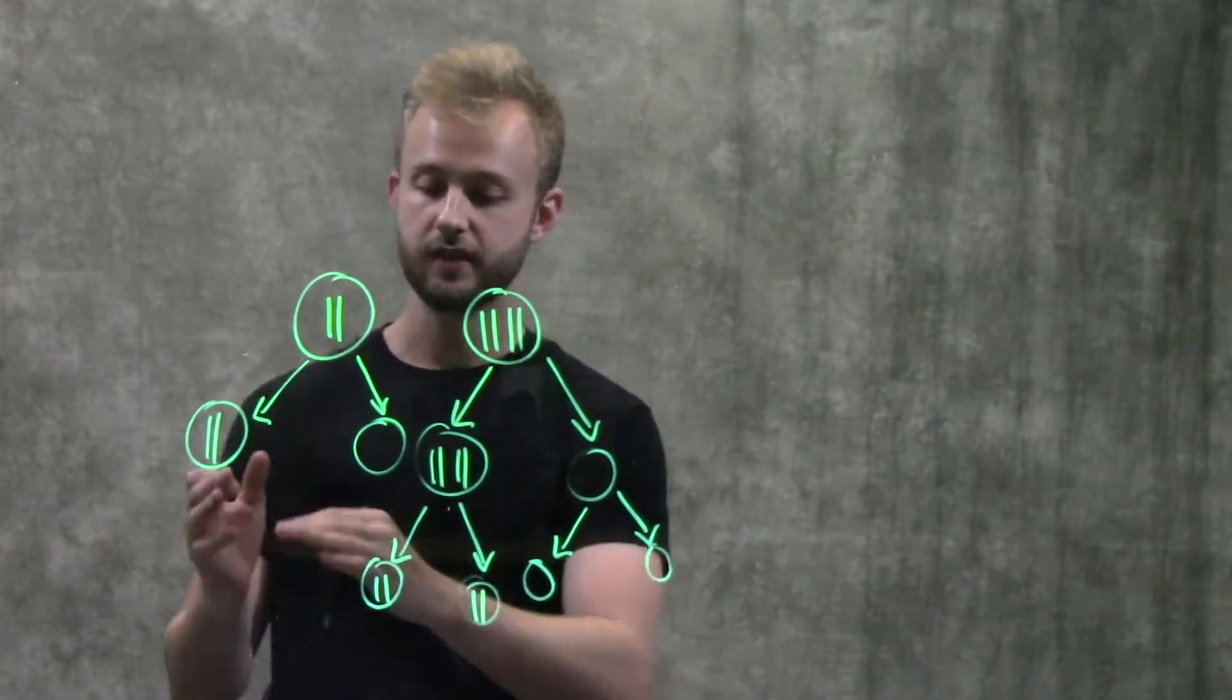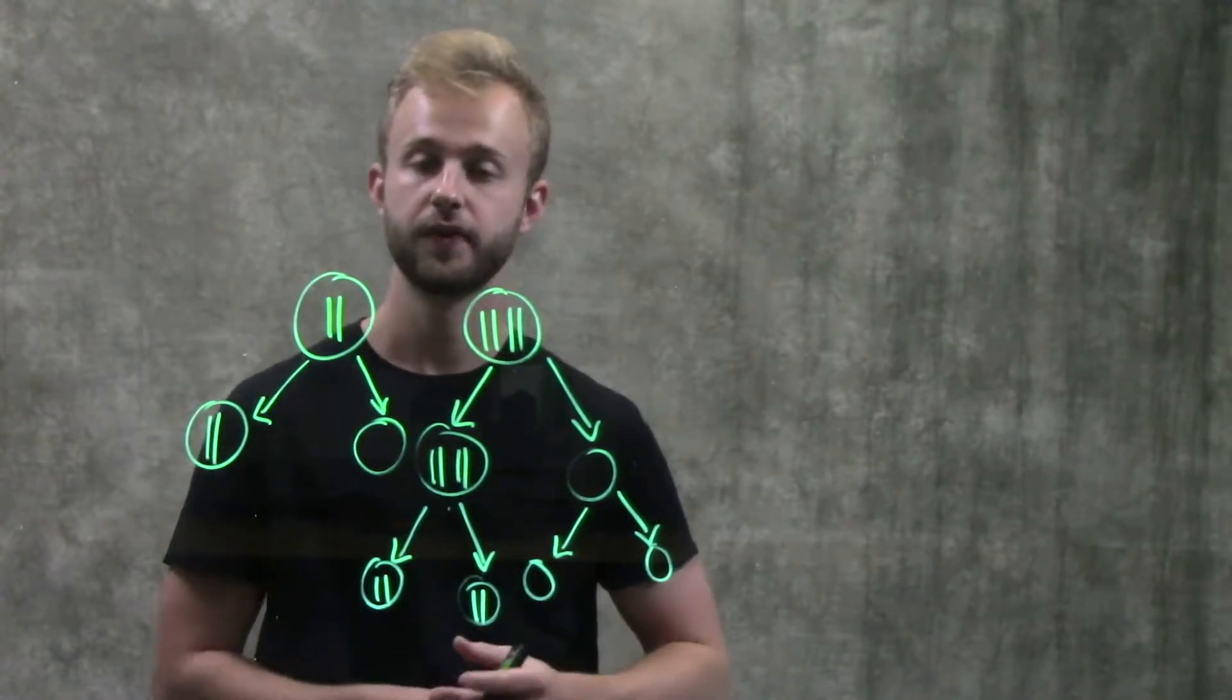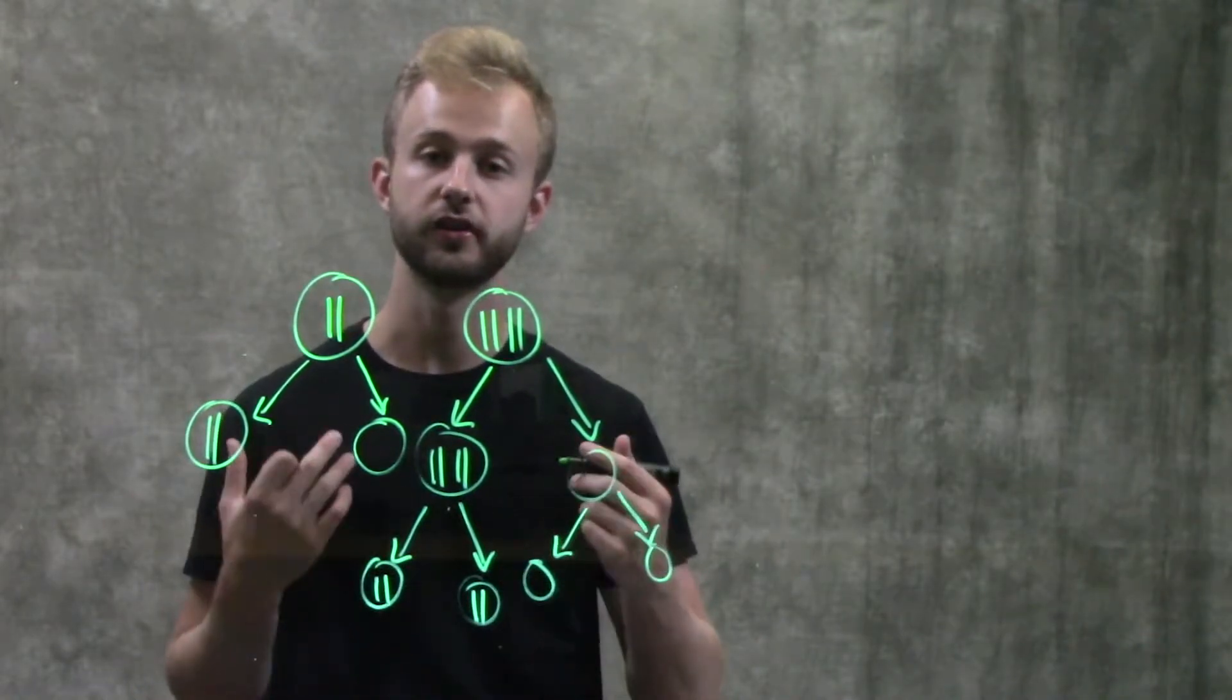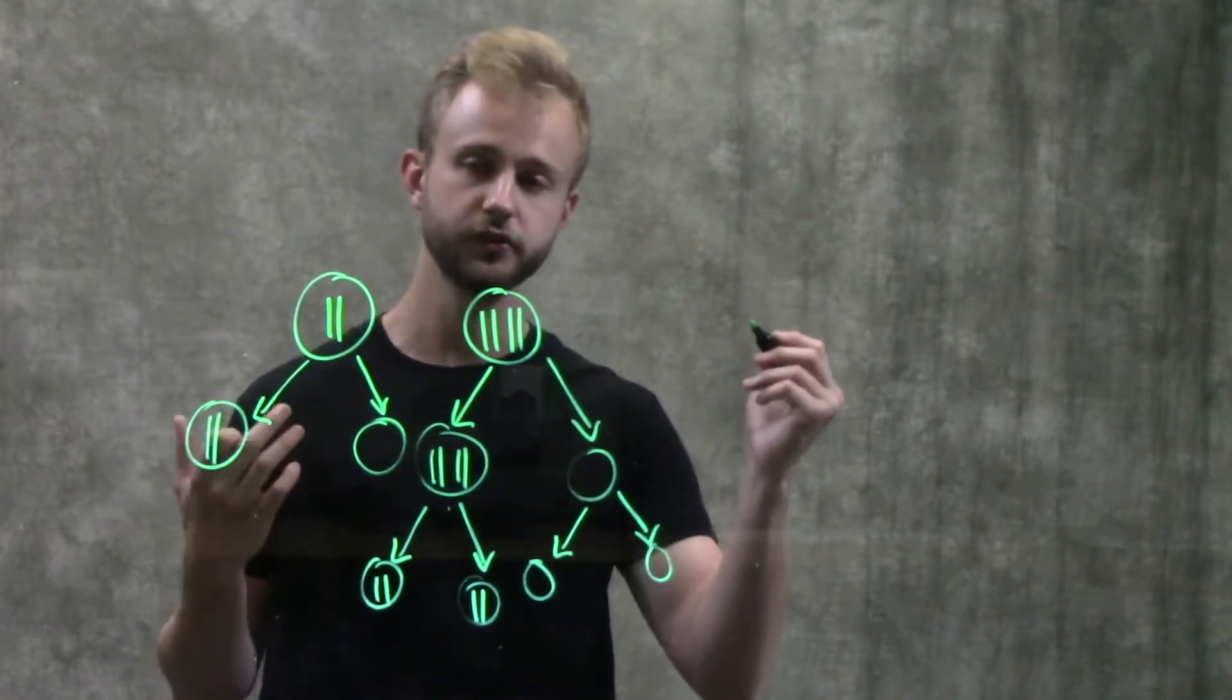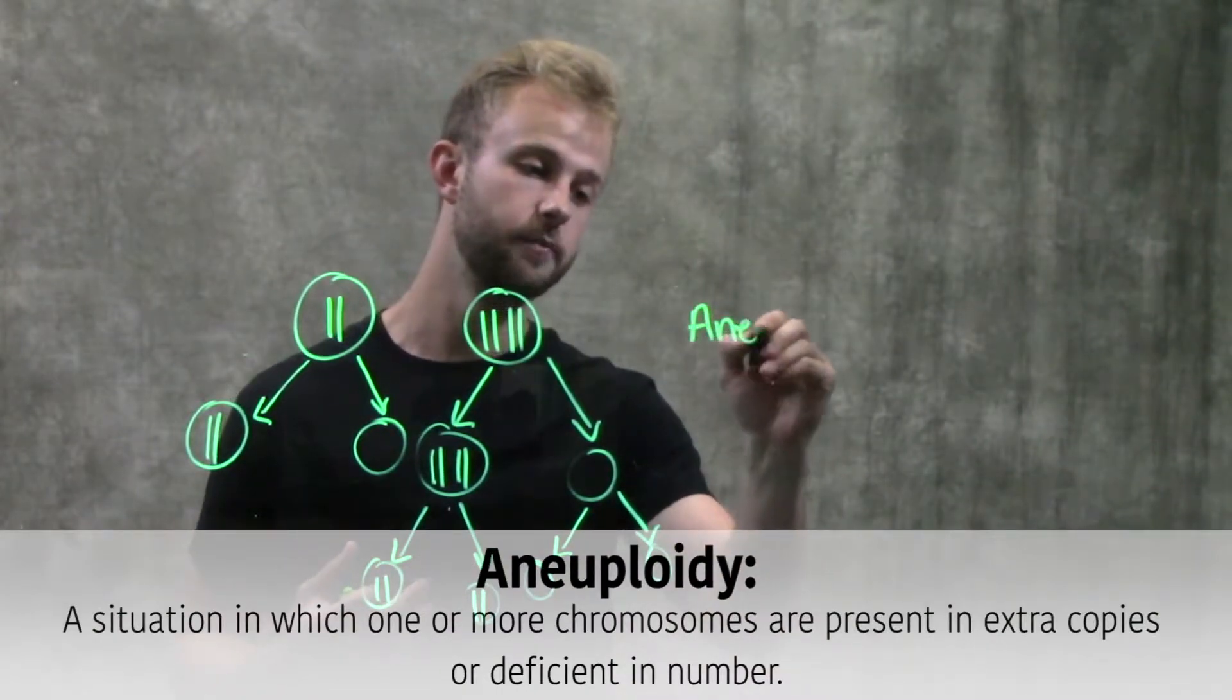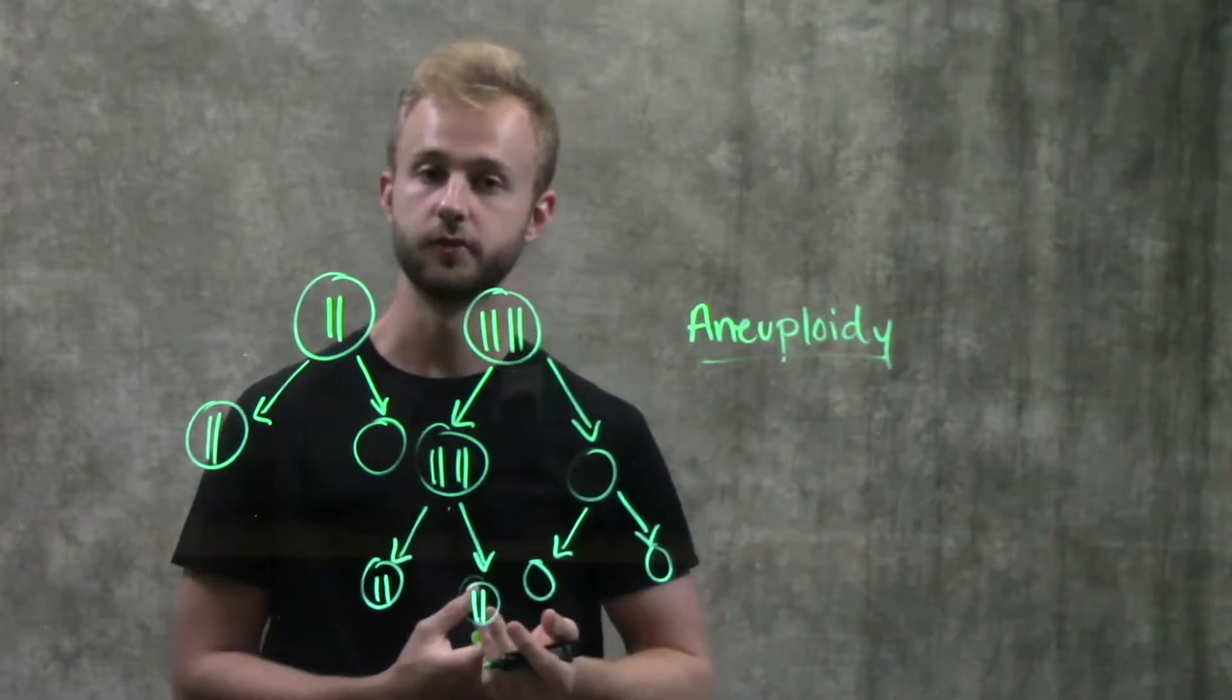So once we have these abnormal gametes, when they fuse with a normal gamete during fertilization, they can produce a zygote that has a condition called aneuploidy. So aneuploidy, that's just going to be the general term for cells that have an abnormal number of chromosomes.